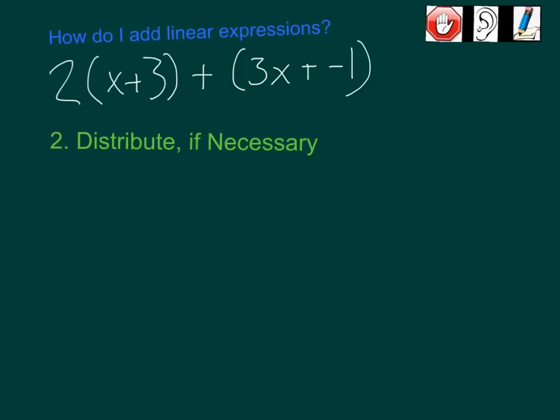Step number two: distribute if necessary. You're not going to need to do this every single time. Don't need to write the heading again. Here we will because we have this 2 being multiplied by the quantity x plus 3. So I'm going to draw my distribution lines. 2 times x is 2x. 2 times 3 is 6. Add them in the middle because I have my addition sign right here. Then I'll just continue on with 3x plus negative 1. I took the parentheses away because the associative property tells me I can group any numbers as long as I'm adding the entire time. So now I've distributed.